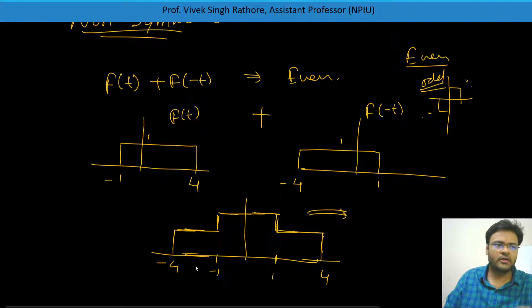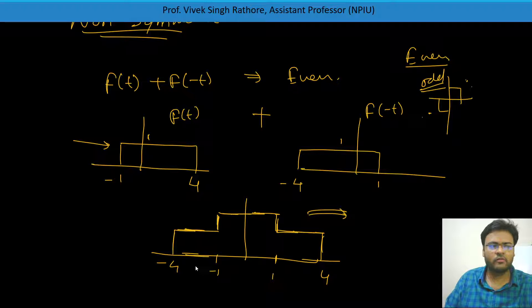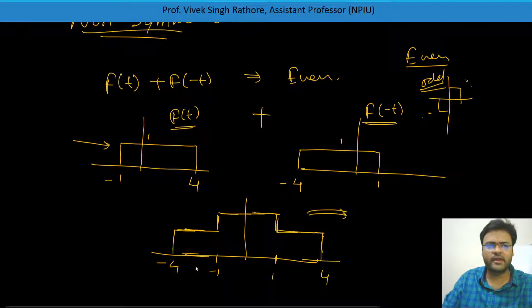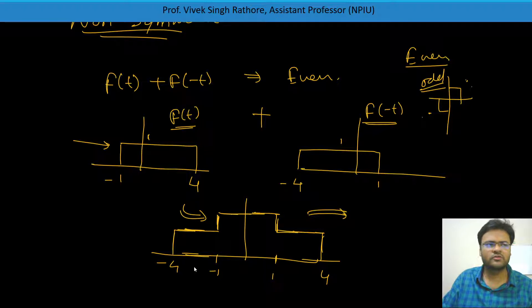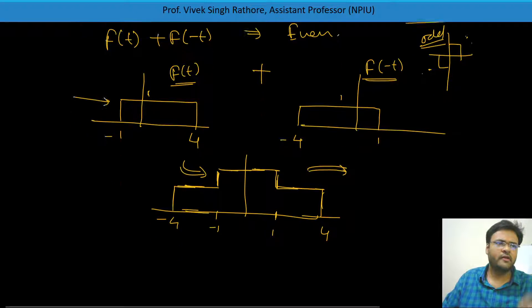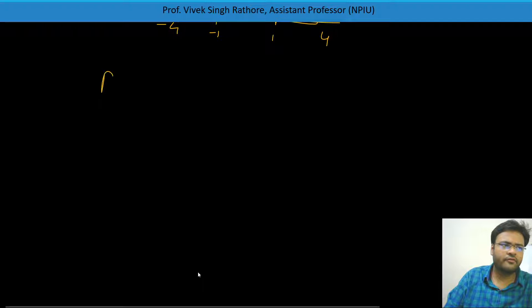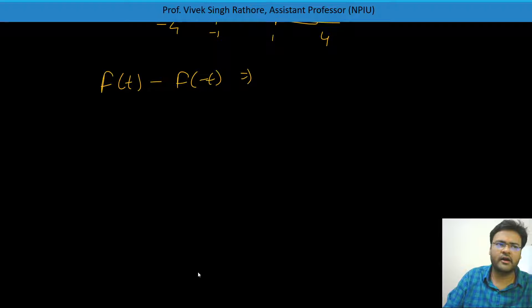We can prove that this signal was neither even nor odd. But whenever F(t) is added with F of minus t, the output will always be even in nature. This can be asked in objective type questions. And whenever we do F(t) minus F of minus t, we will always get an odd signal.